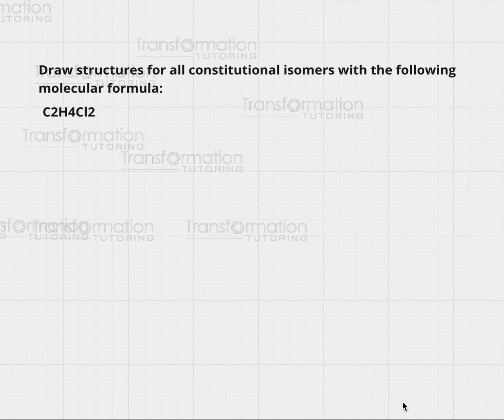Draw structures for all constitutional isomers with the following molecular formula C2H4Cl2. This is Milochi bringing you another constitutional isomers problem and I will show you how to do this. Constitutional isomers are molecules that have exactly the same formula but different structure and therefore a different name.